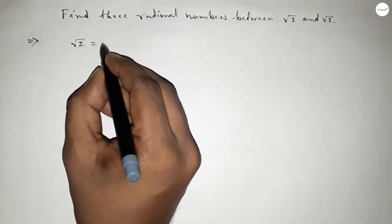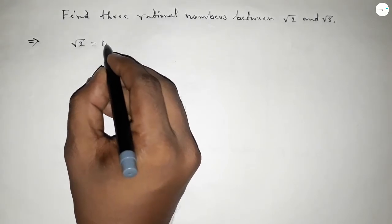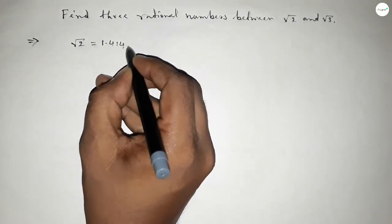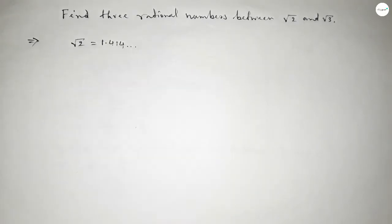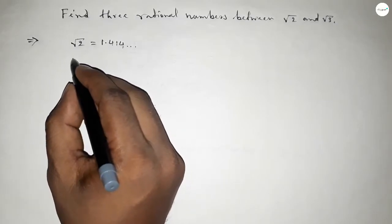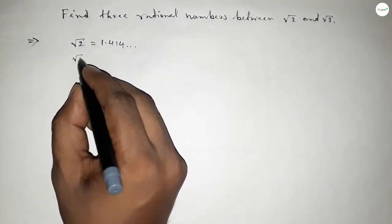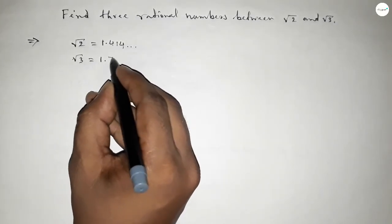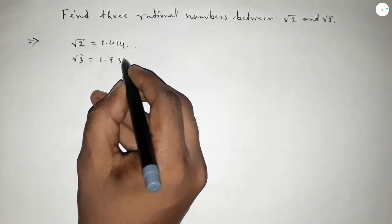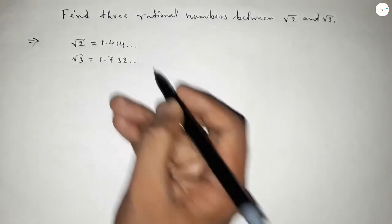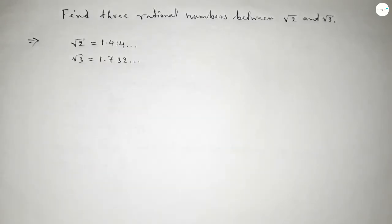So root 2 is equal to 1.414 continuing, and root 3 is equal to 1.732. If you don't know how to find the value of root 2 and root 3, then please watch my video which I link in the i-button.